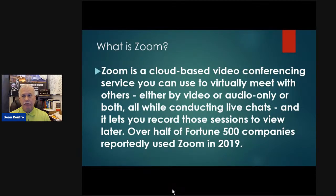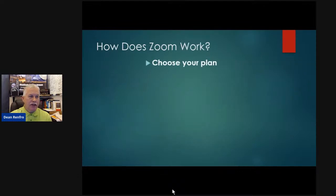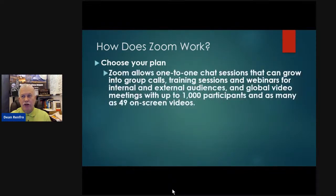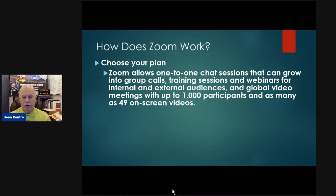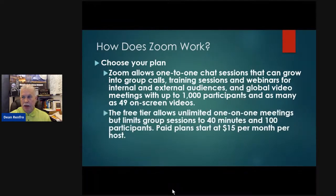How does Zoom work? First, you choose a plan. Zoom allows one-to-one chat sessions that can grow into group calls, expand into training sessions — you can even do a webinar and post it for people to watch and interact with. You can have up to a thousand participants with some plans, and up to 49 on-screen videos — meaning 49 people visible on one screen at the same time. I'll show you what that looks like in just a minute.